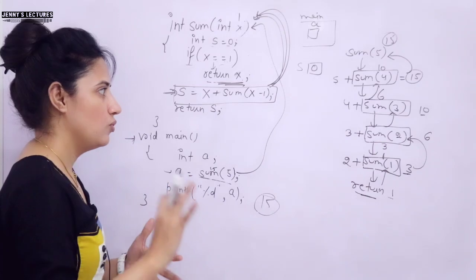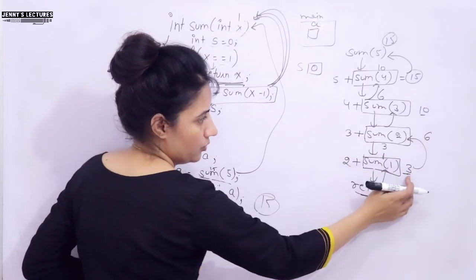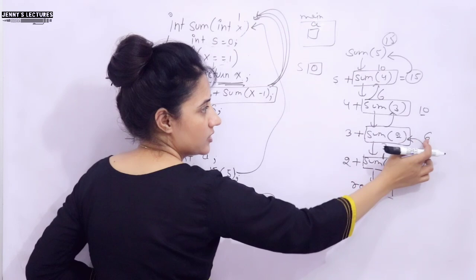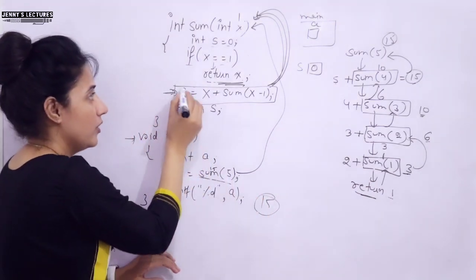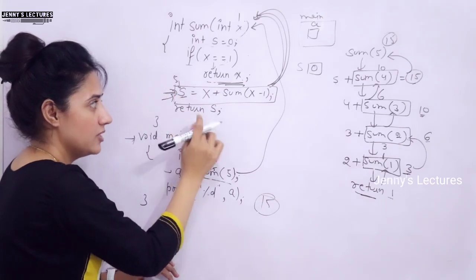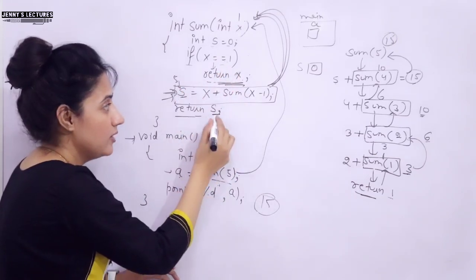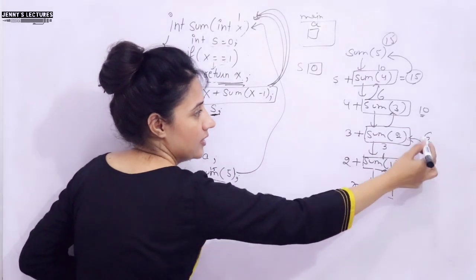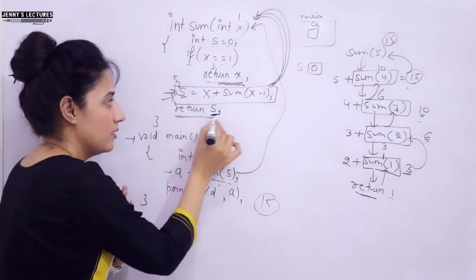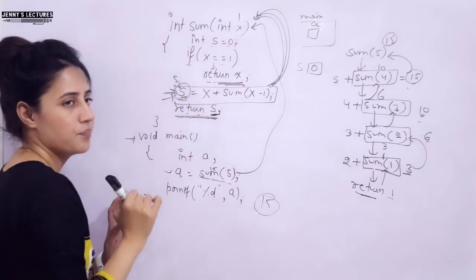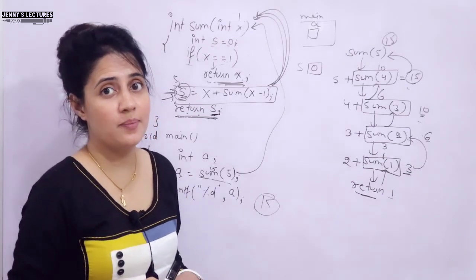To summarize: 2 + 1 = 3, that 3 is returned, then 3 + 3 = 6, then 6 is returned, giving us 6, 10, 15. This is the value stored in s. The statement return s returns 3, then 6, then 10, then 15 — and 15 is finally returned to main. In the next video we will see types of recursion. See you in the next video — bye!